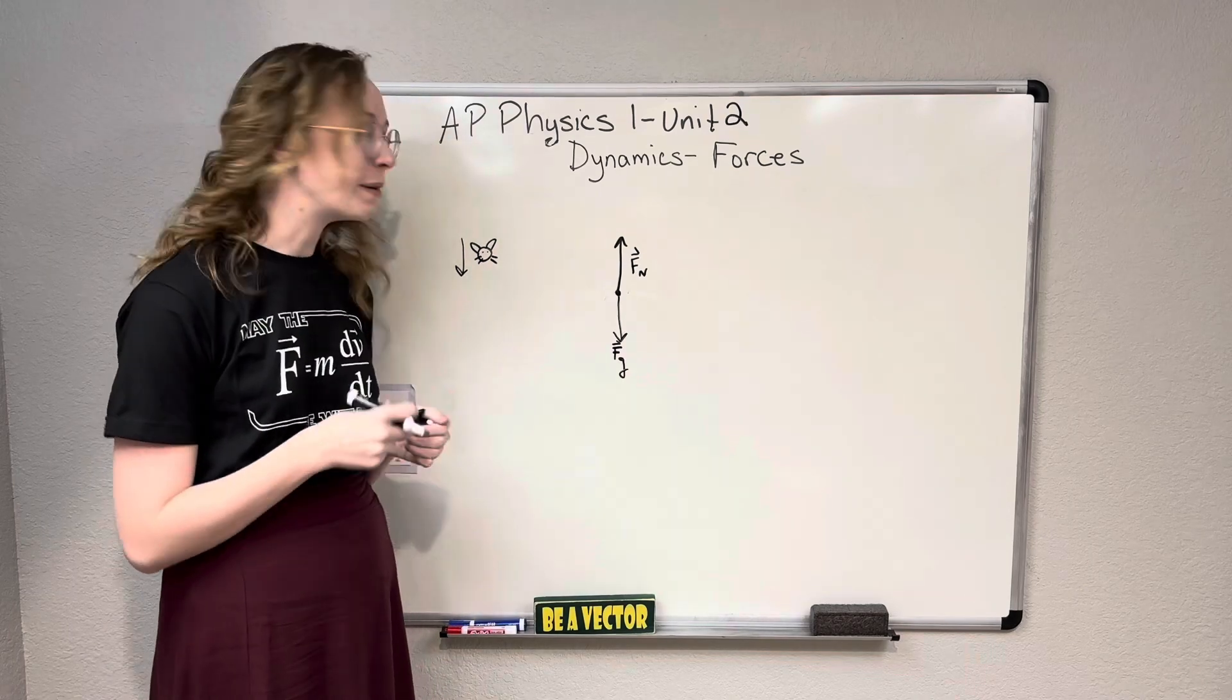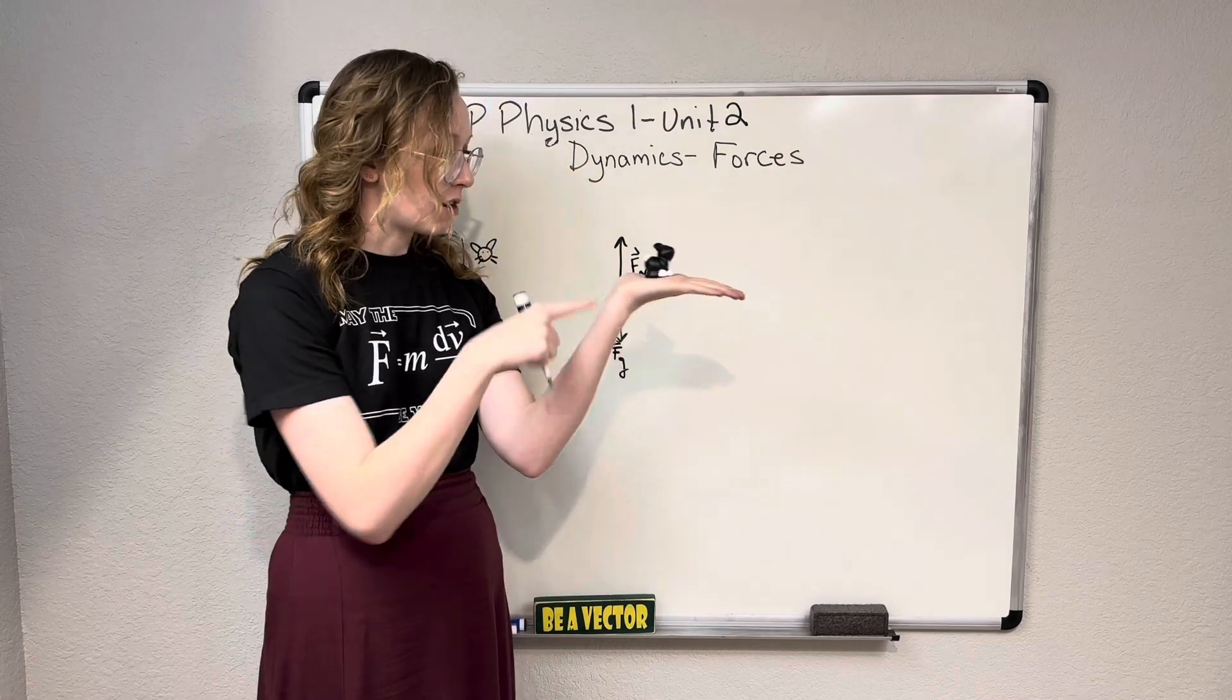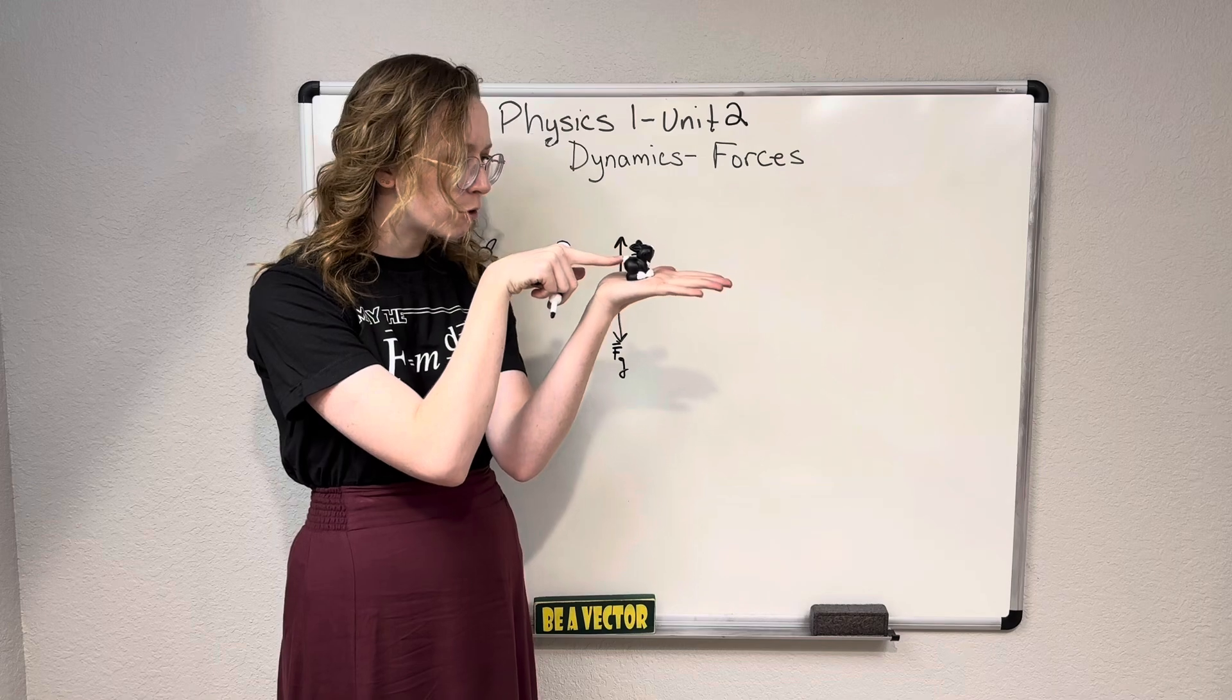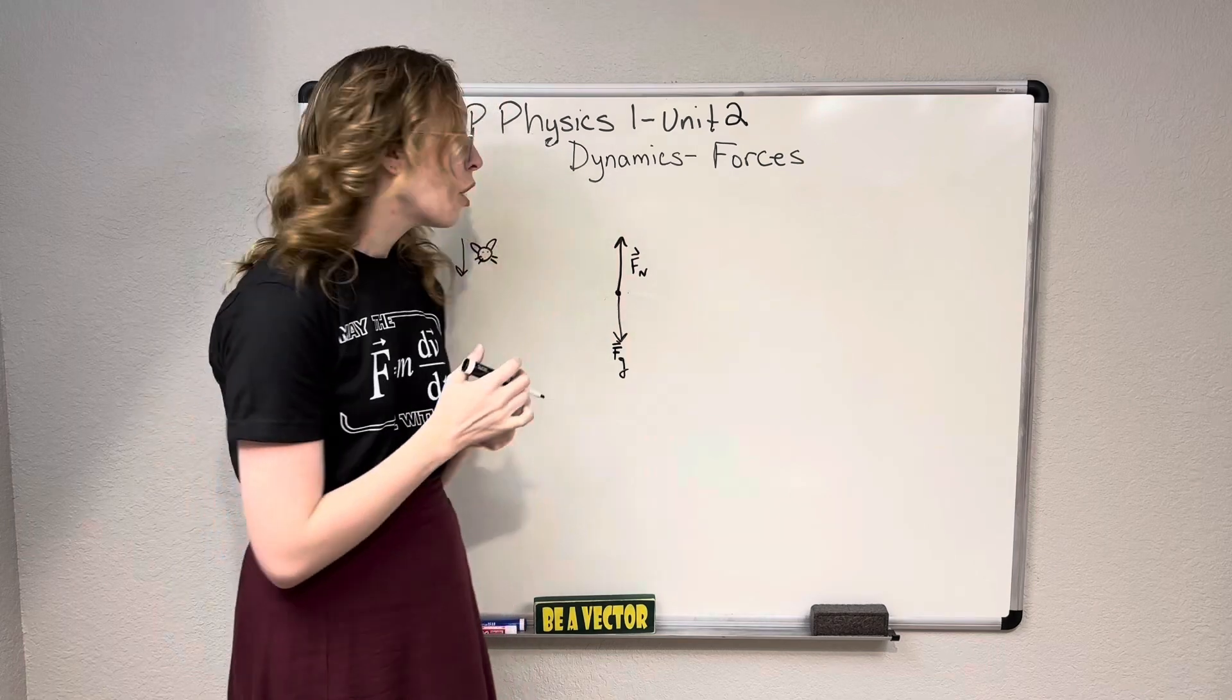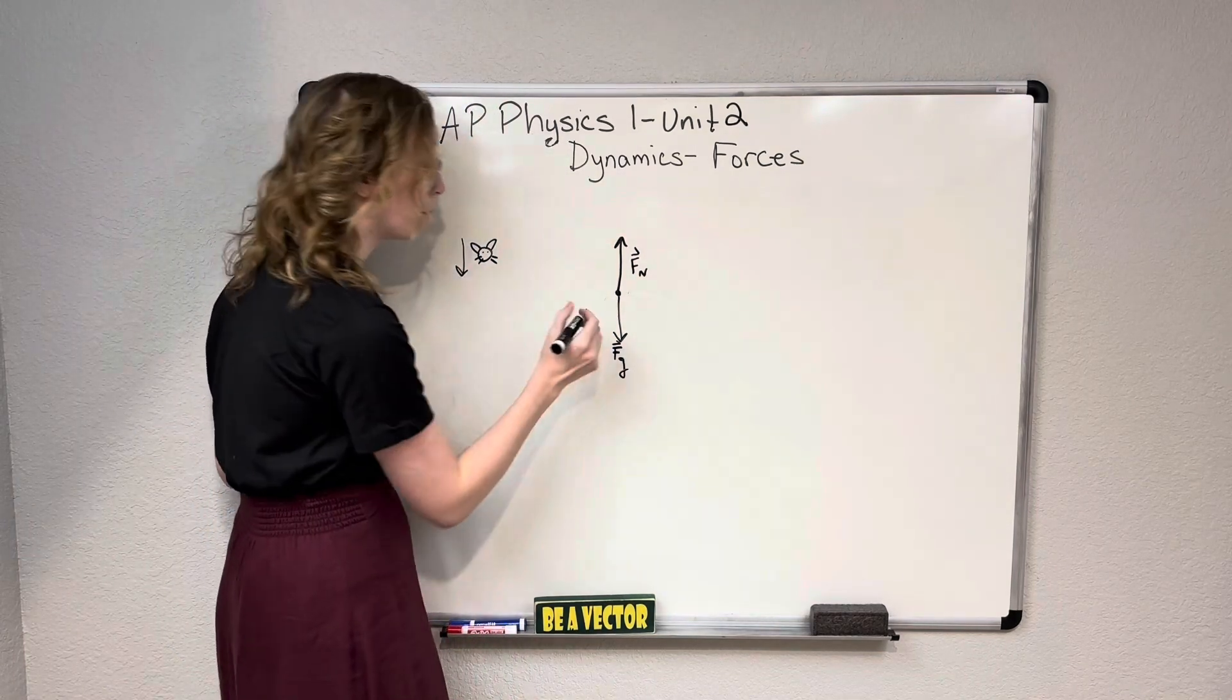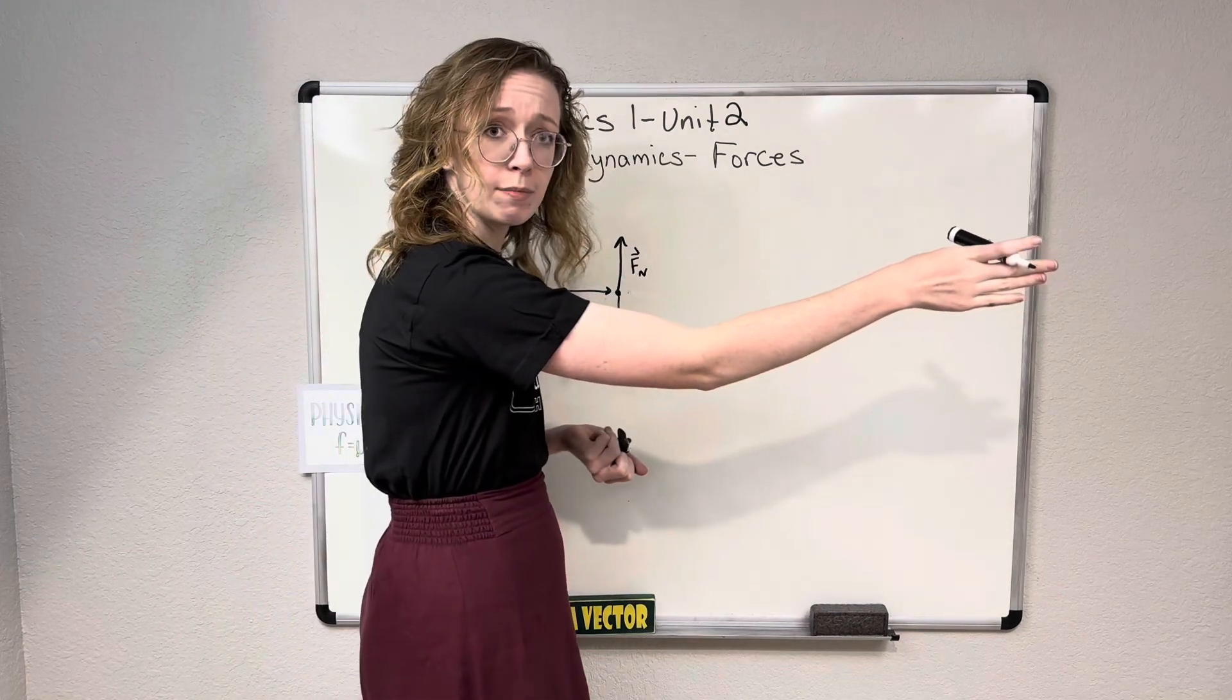But now let's make things a little bit more complicated. Let's say that when Isaac is sitting here on my hand, I just gave him a little tiny push, but not a strong enough push to get him to actually move just a little push like that. So how do we represent that? Well, you might be tempted to draw the arrow that denotes the force of the push like this, because I'm pushing on Isaac, I'm pushing him this way, right?